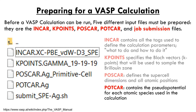With the exception of the POTCAR, these input files must be constructed by hand using a word processor of your choice. It's important to note that VASP doesn't tolerate hidden characters or tabs in these files. Additionally, it'll be necessary to convert text files from Windows format to UNIX format before you can perform your calculations. In the rest of this episode, I'll walk you through how to construct the input files necessary to perform this VASP calculation.